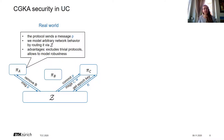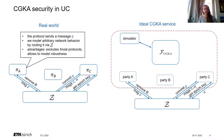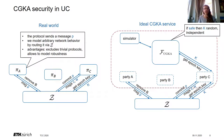To define security, we compare the real world to an ideal world where the environment Z interacts not with the protocol but with dummy parties who forward all inputs and outputs to the ideal CGKA functionality F, which also interacts with a simulator. When Z requests an epoch key, this is forwarded to F, which — secure by design — samples a random independent key. This models security, because it's indistinguishable from the real world where the key comes from the protocol. Messages don't have meaning in the ideal world, so we allow the simulator to choose them.